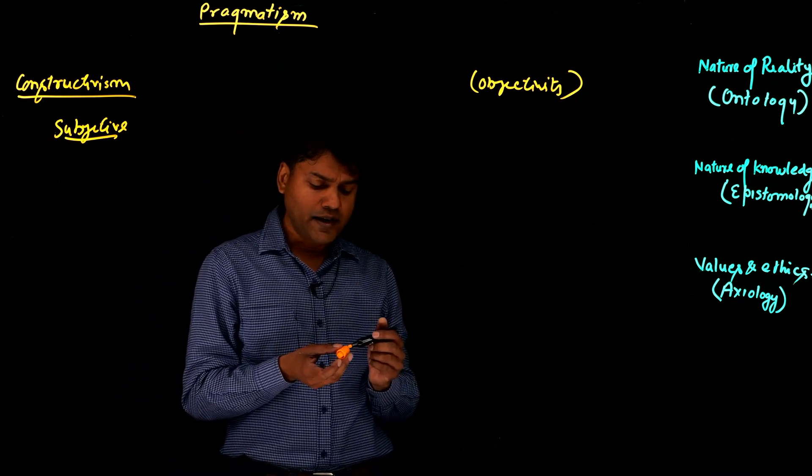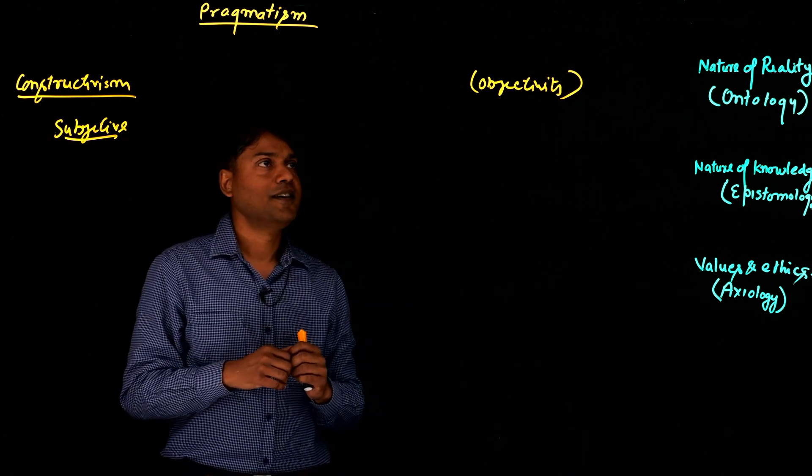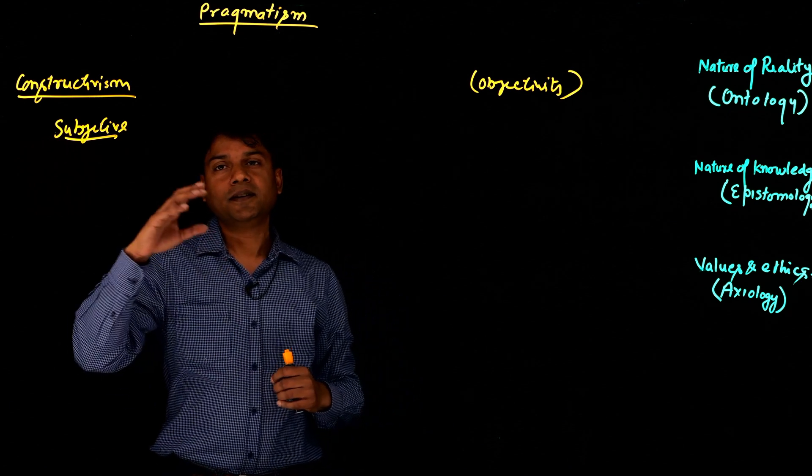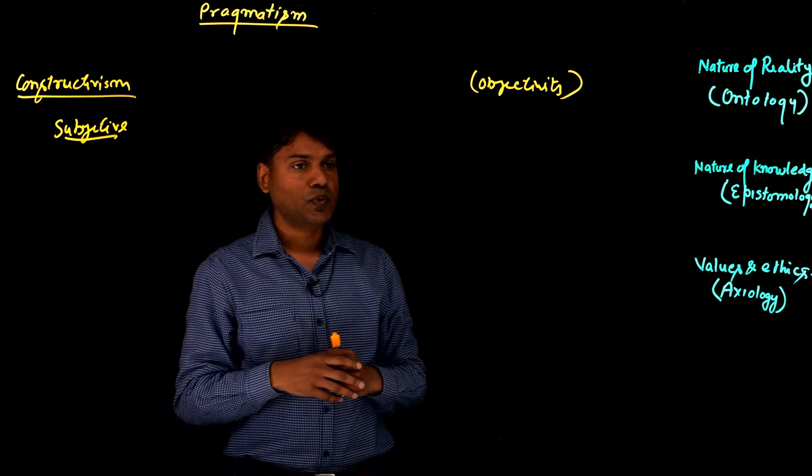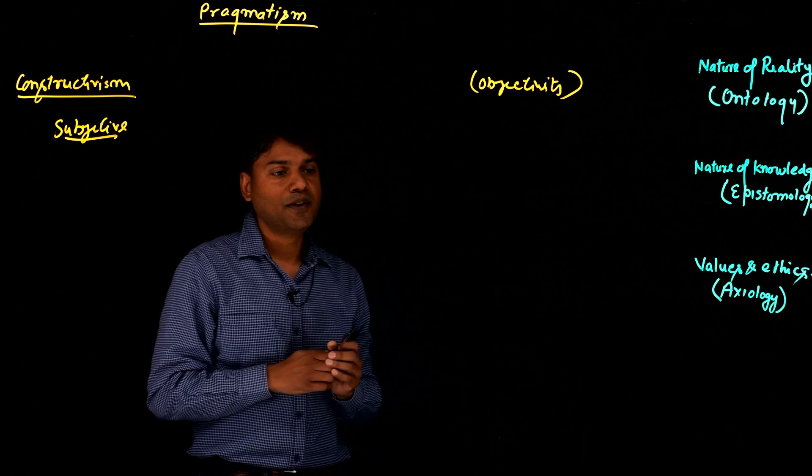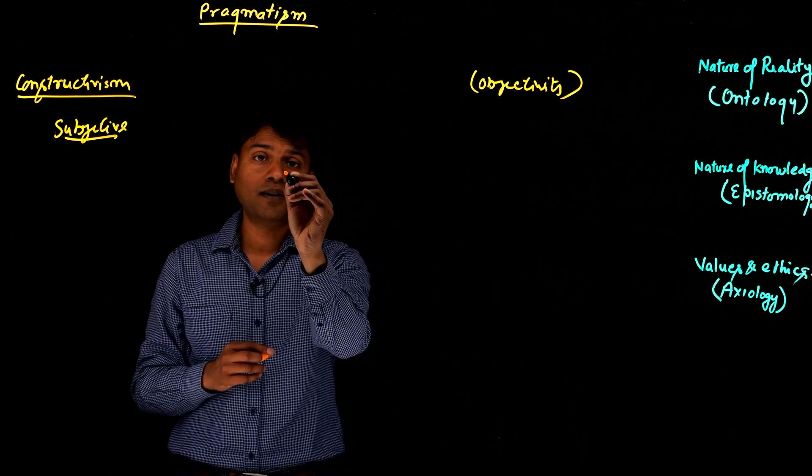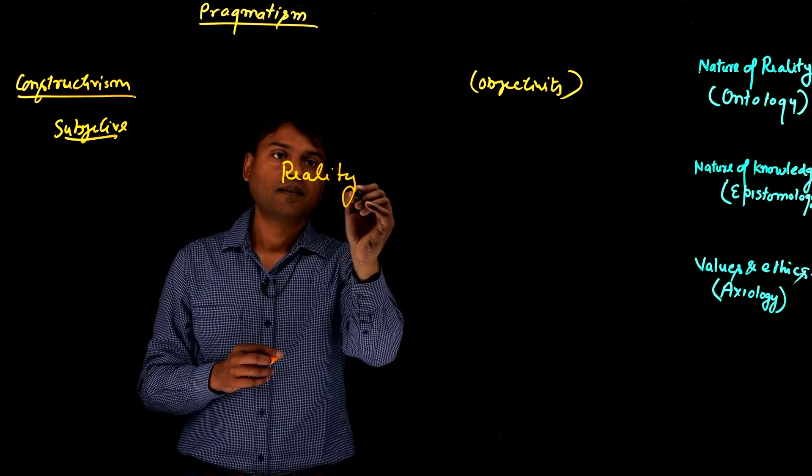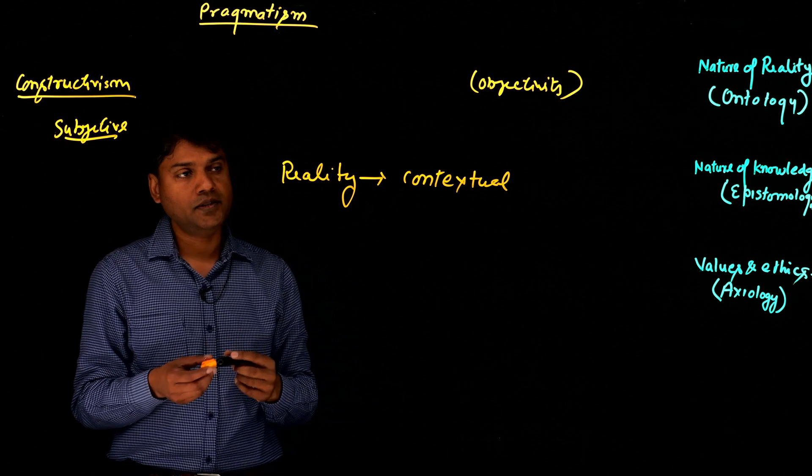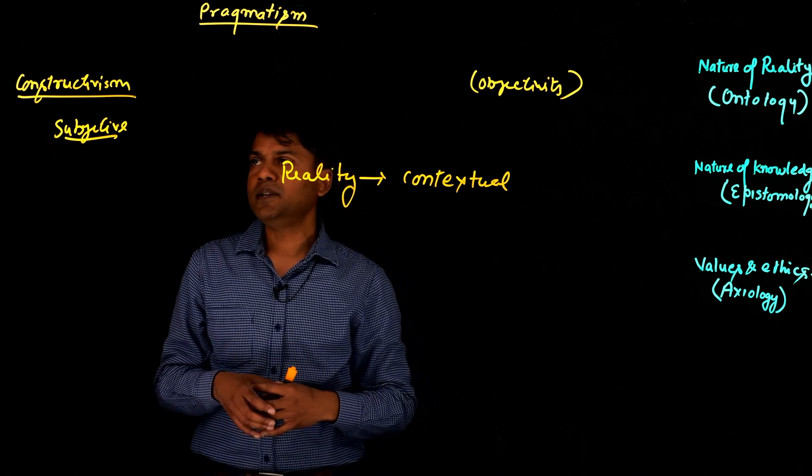Pragmatism provided a sort of middle path. So for them, they said this complete objectivity might be true in some case, but not completely. We also understand subjectivity. We also acknowledge that. So we do not subscribe to either one of this. In a way, we take a middle path, where we think that reality is sometime, in some reality is contextual, means context-based. So maybe in some case, reality is objective, but in some case, maybe it's subjective.